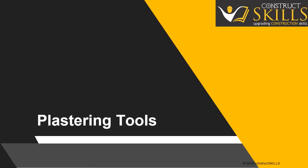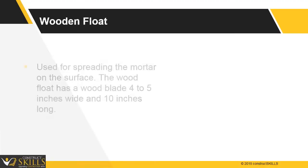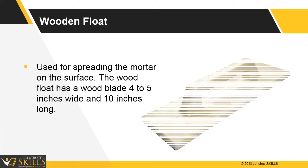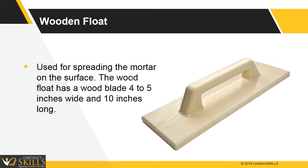In this lecture, we are going to talk about the tools used for plastering. Wooden float is used for spreading the mortar on the surface of fresh mortar. The wood float has a wood blade which is four to five inches wide and ten inches long.